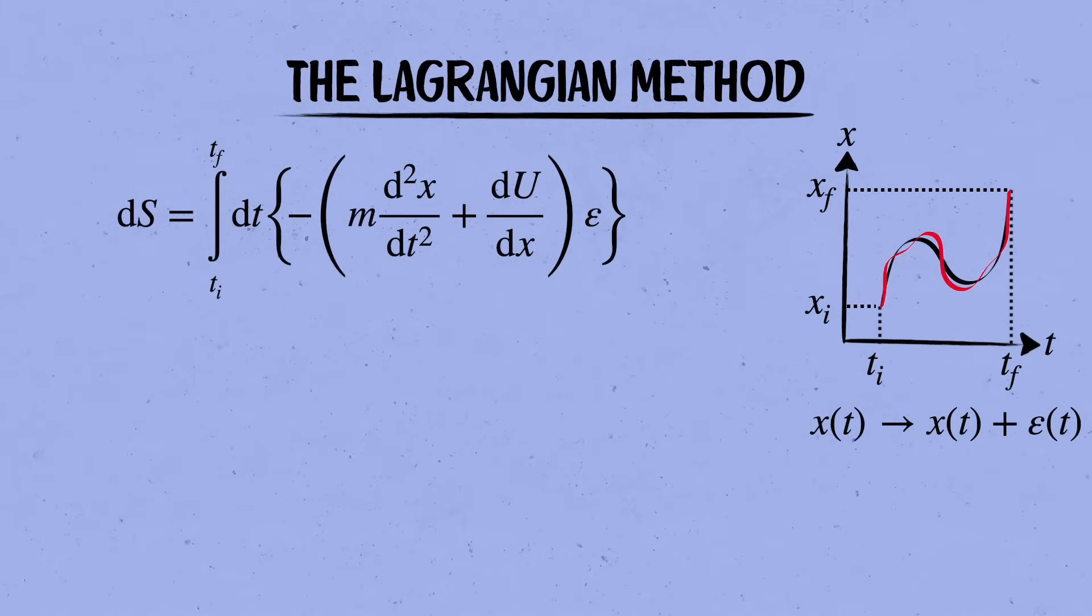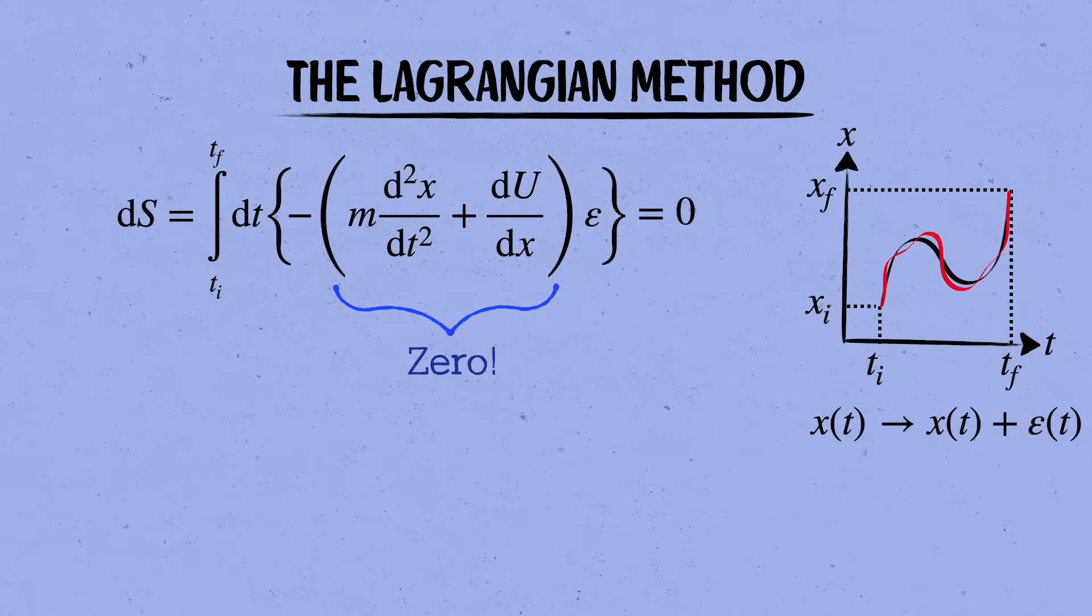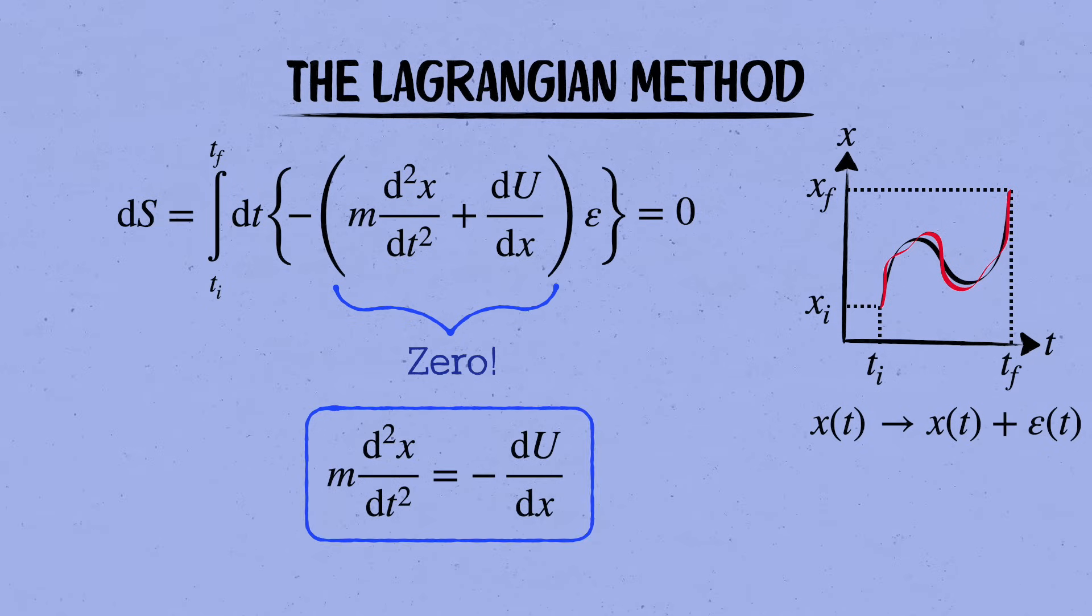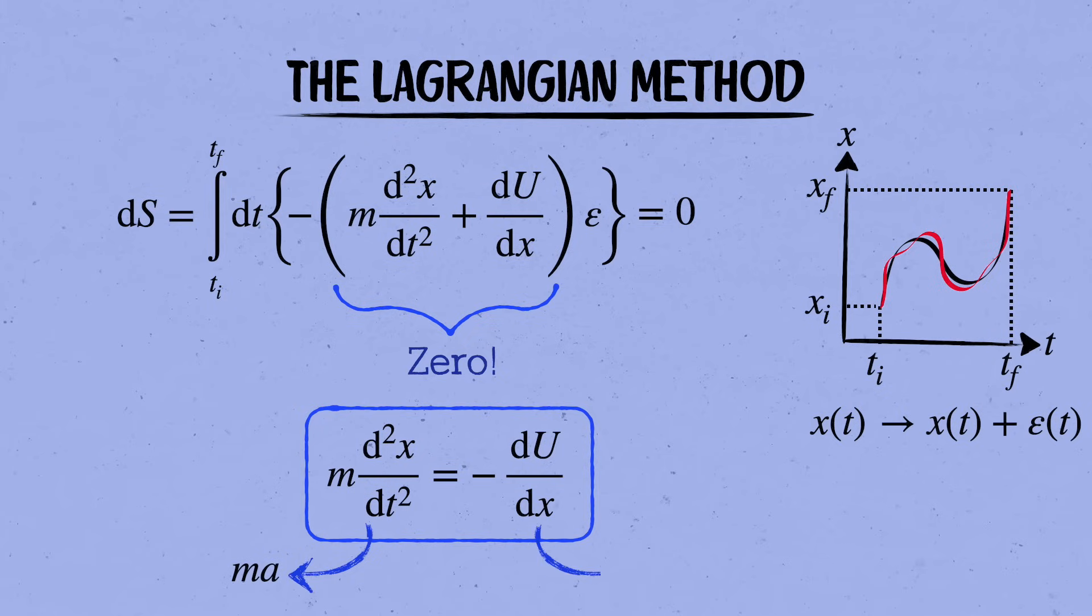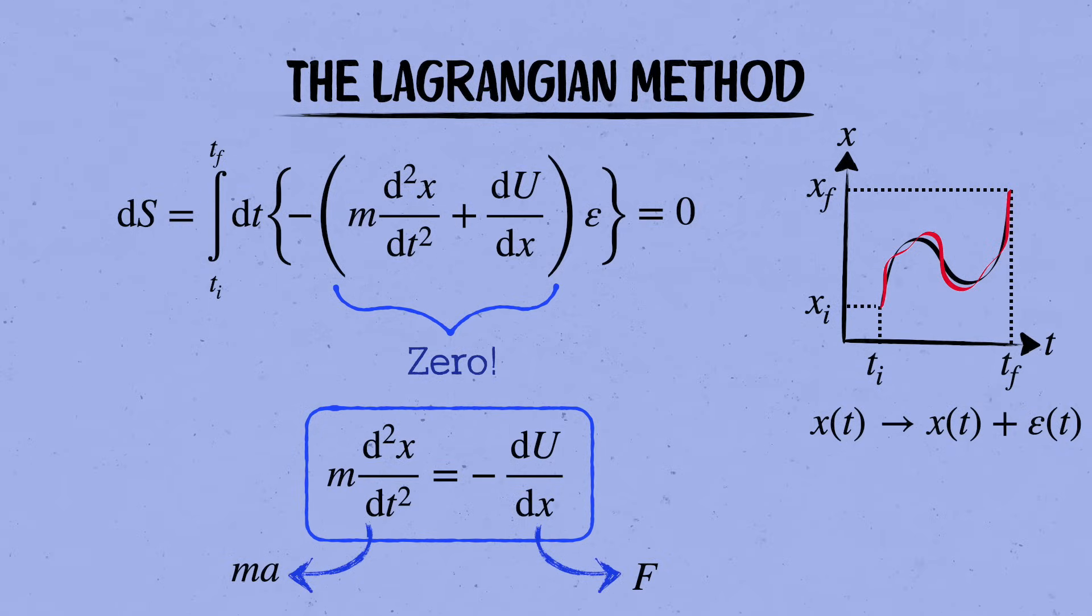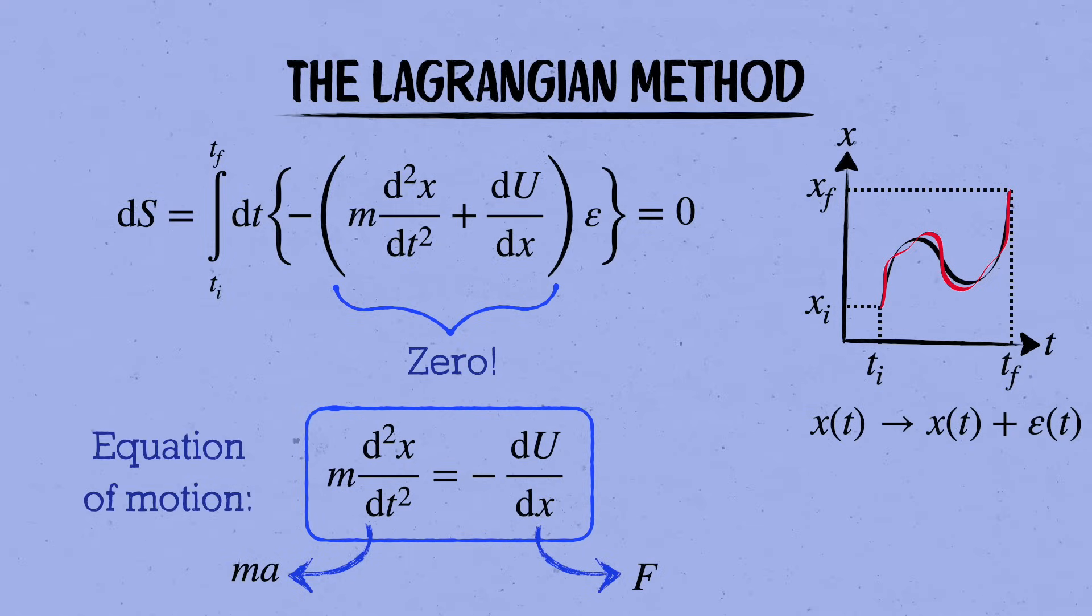So now our formula for ds is looking a lot simpler, and the extremal trajectory is the one that makes this vanish for any little variation epsilon of t that satisfies the boundary conditions. But the only way this integral can vanish for any epsilon of t is if the thing that's multiplying it in the integrand is zero. Therefore, the principle of least action tells us that the particle's actual trajectory is the path that satisfies m times the second derivative of x with respect to t equals minus du by dx. But that's just f equals ma. Well remember, the force is related to the potential energy by f equals minus du by dx. So that's how the principle of least action for a particle reproduces f equals ma, what we call the equation of motion for the particle.